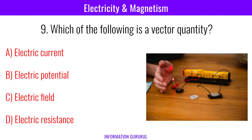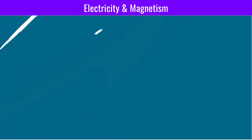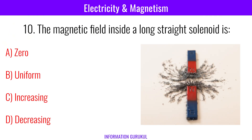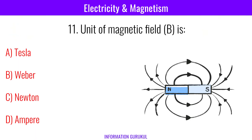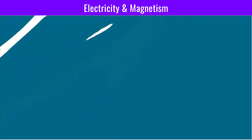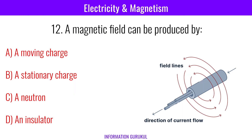Which of the following is a vector quantity? Electric field. The magnetic field inside a long straight solenoid is uniform. The unit of magnetic field is Tesla. A magnetic field can be produced by a moving charge.